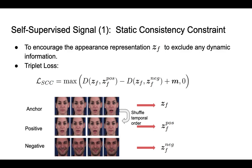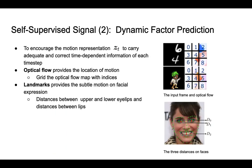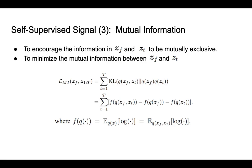The first signal is to exclude dynamic information from the appearance representation. For the second one, we leverage optical flow and detected landmarks to learn motion representation. We also minimize the mutual information of the two types of representations.